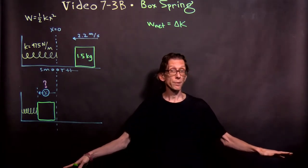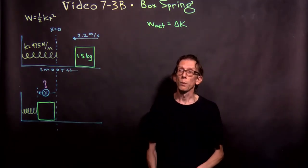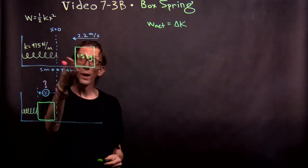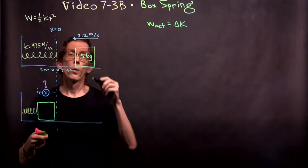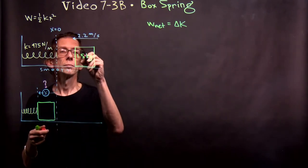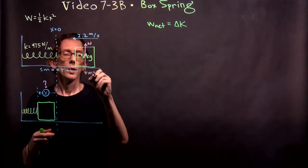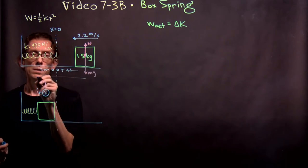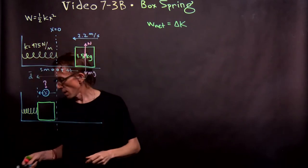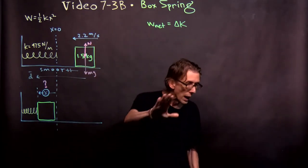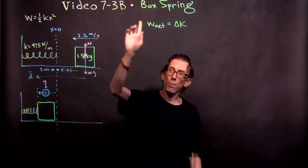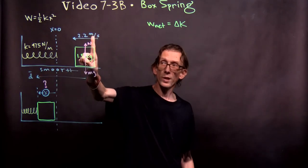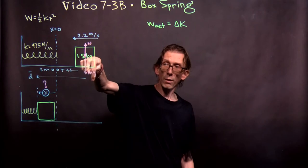We're going to use the work-energy theorem, the same as we've done in the last couple of examples. What are the forces acting on the block? Before it hits the spring, there's only the normal force and the weight. Neither one of these forces does any work, because they are perpendicular to the direction of the displacement, which is to the left. Normal force is up — that's 90 degrees from the displacement. Weight is down — that's also 90 degrees from the displacement.